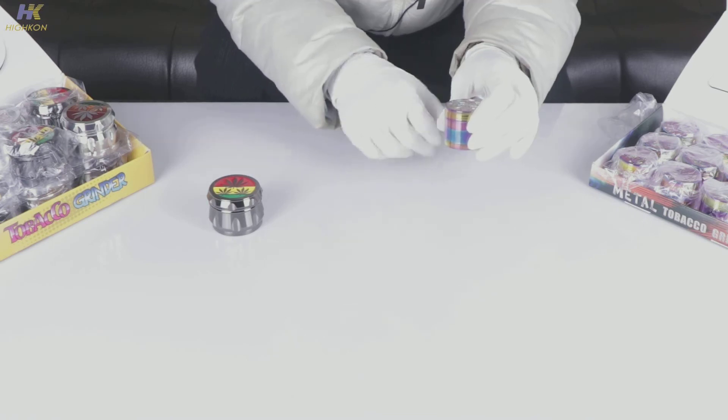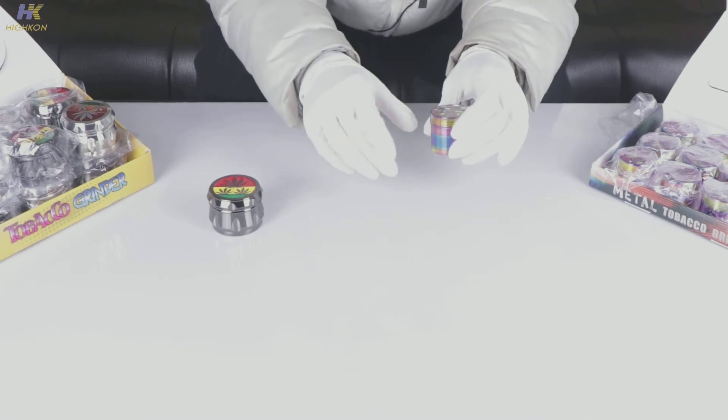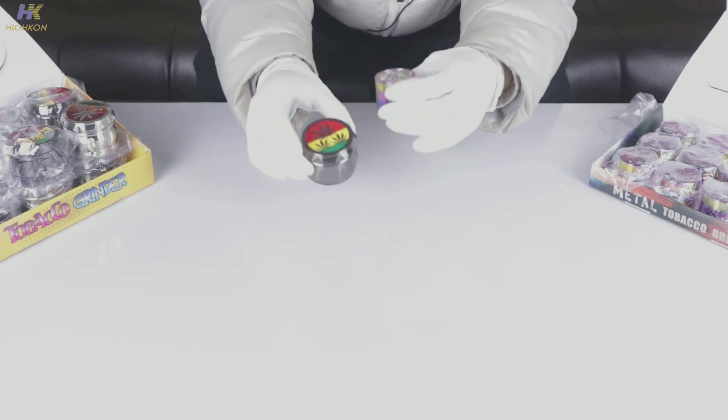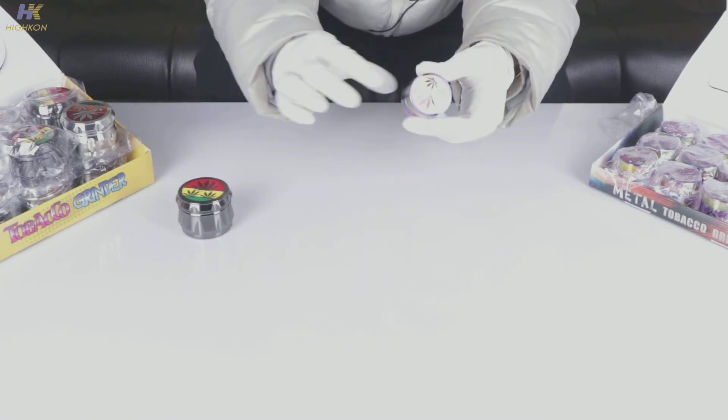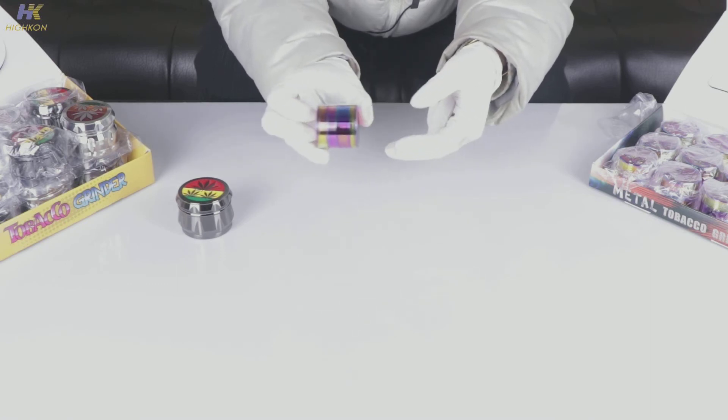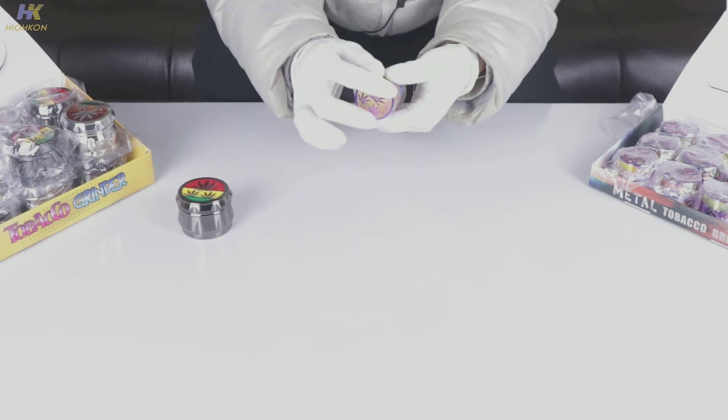And for the smaller one, the procedure of how to grind the herbs is just the same, so we'll skip it. We just compare their appearances. From their appearance, we can see that the smaller one has a very colorful and dazzling relief of three maple leaves on its surface.